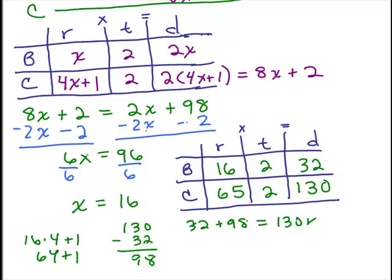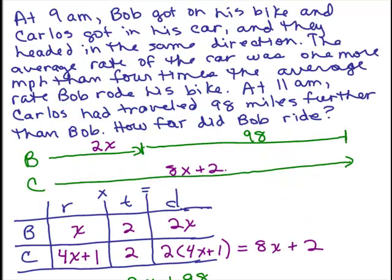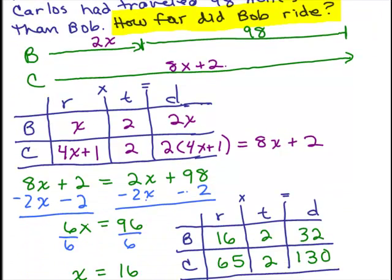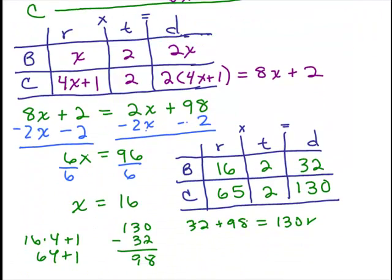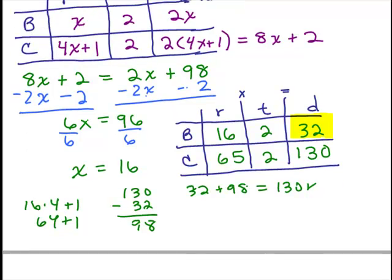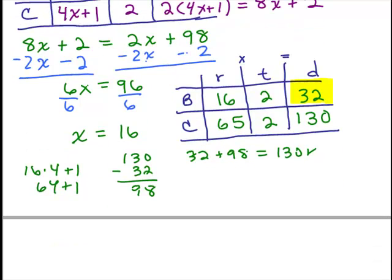So now we're ready to answer the question. How far did Bob ride? That means it needs to know the distance Bob rode, and that's right there, 32 miles. You have to remember it's in miles. Bob rode 32 miles.